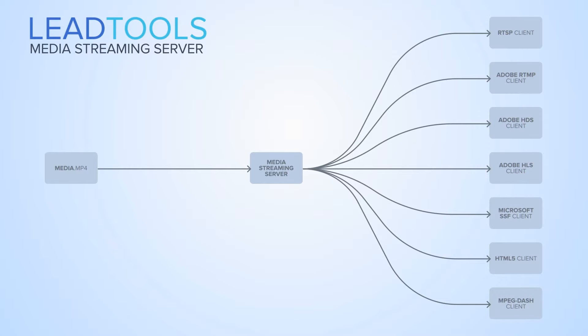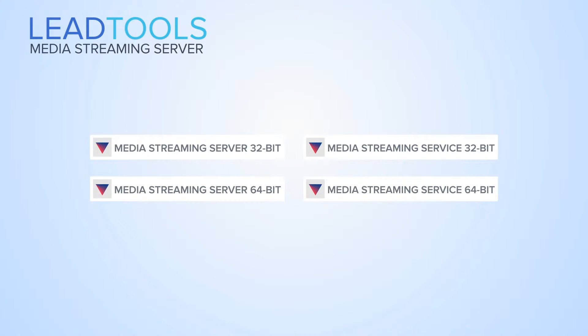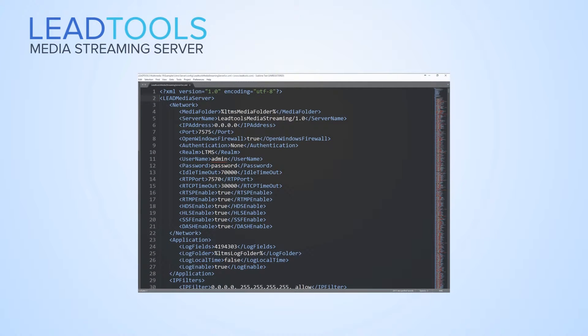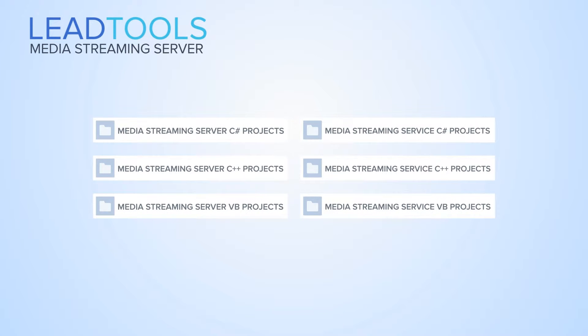The LEADTOOLS media streaming server SDK simplifies this task. With one source file, the media server SDK can support all of these clients and provide dynamic bandwidth for protocols that support it. The LEADTOOLS multimedia installation includes GUI and Windows service implementations. All of the features that can be set in the GUI may be set in the service implementation by editing an XML settings file. .NET and C++ source code for these implementations is available in the installation.